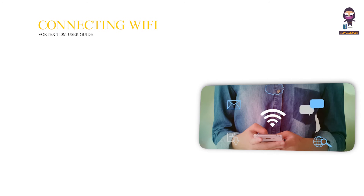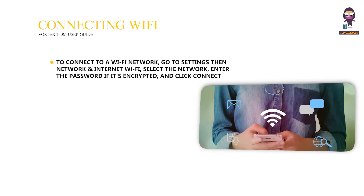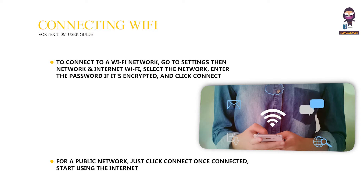Connecting Wi-Fi. To connect to a Wi-Fi network, go to Settings then Network and Internet then Wi-Fi, select the network, enter the password if it's encrypted, and click Connect. For a public network, just click Connect; once connected, start using the Internet.